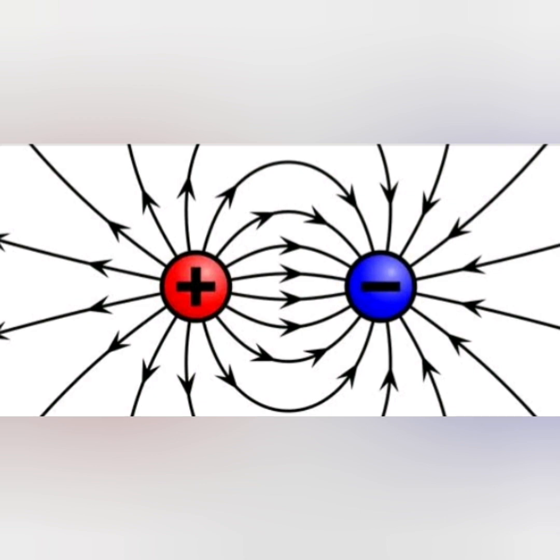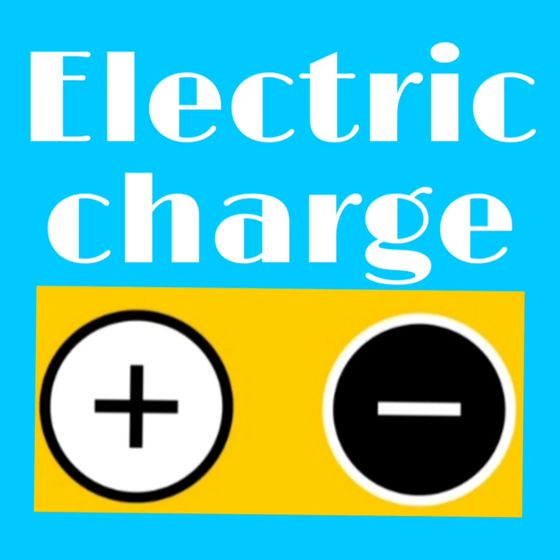Now we will discuss about electric charge. A scientist named Thales was the first who discovered the fact that amber rubbed with wool or silk cloth attracts light objects.